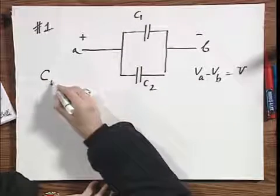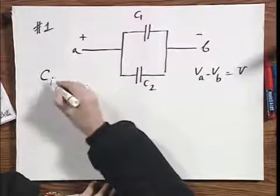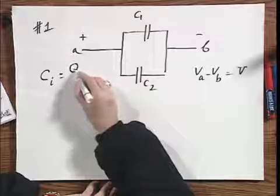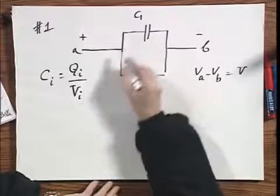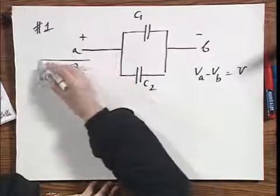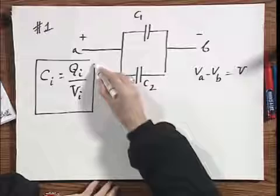They both see the same voltage. What always holds is that C of I, which is capacitor I, always has a charge Q of I on it, if the voltage over that capacitor is V of I. This you can always use, it's always true.